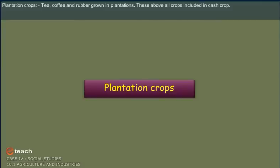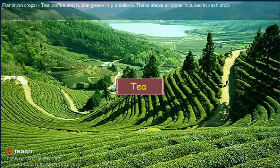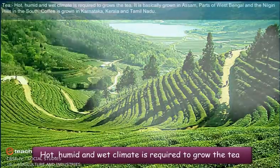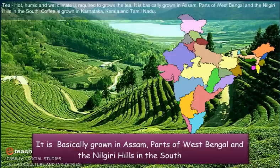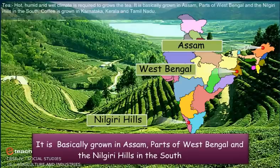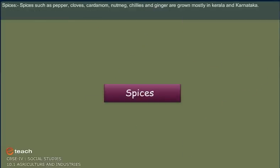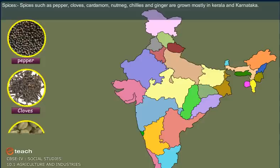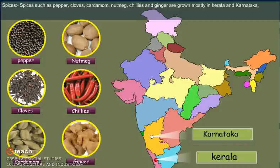Plantation crops: Tea, coffee, and rubber are grown in plantations, and these are all included in cash crops. Hot, humid, and wet climate is required to grow tea. It is basically grown in Assam, parts of West Bengal, and the Nilgiri Hills in the south. Coffee is grown in Karnataka, Kerala, and Tamil Nadu. Spices such as pepper, cloves, cardamom, nutmeg, chilies, and ginger are grown mostly in Kerala and Karnataka.